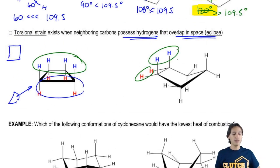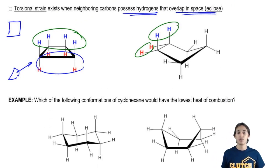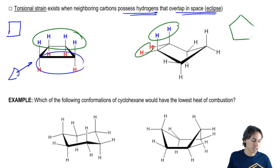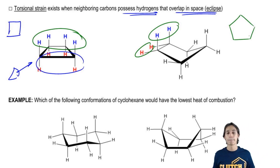But it turns out that if your professor were to ask you, what is the main source of instability for cyclopentane, by the way, this is just a 3D version of that.